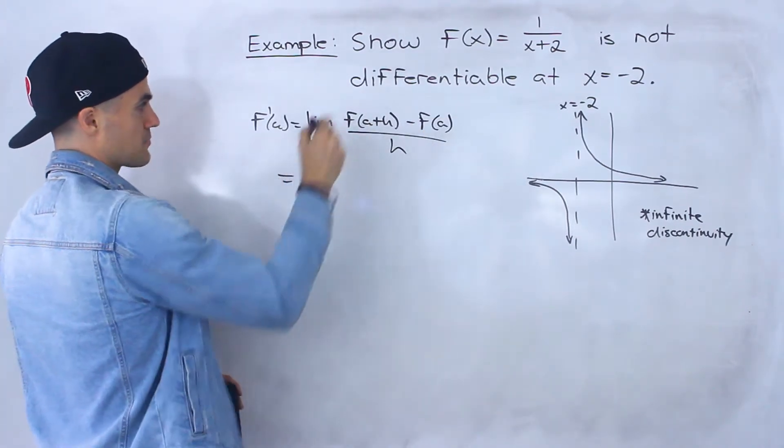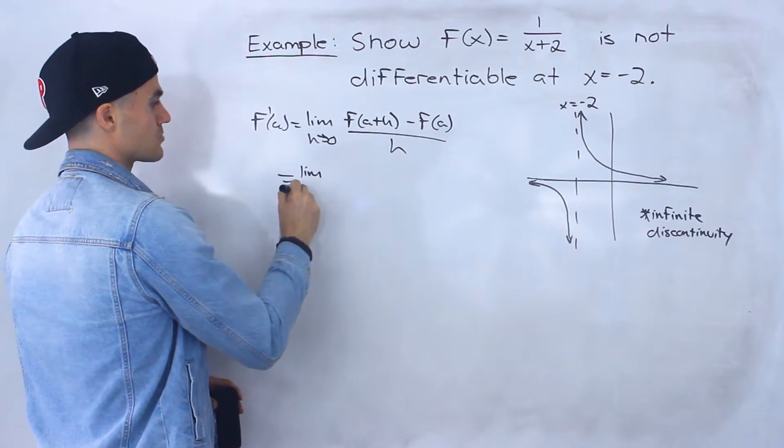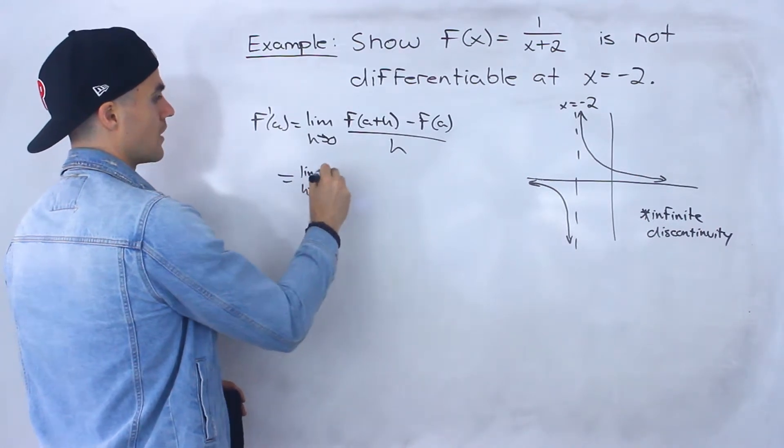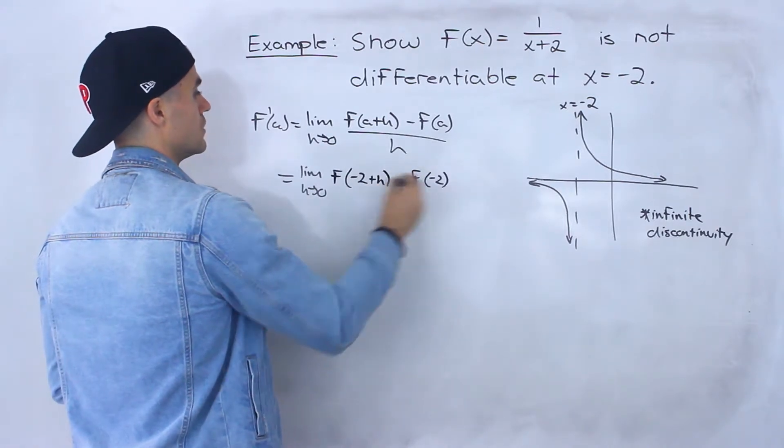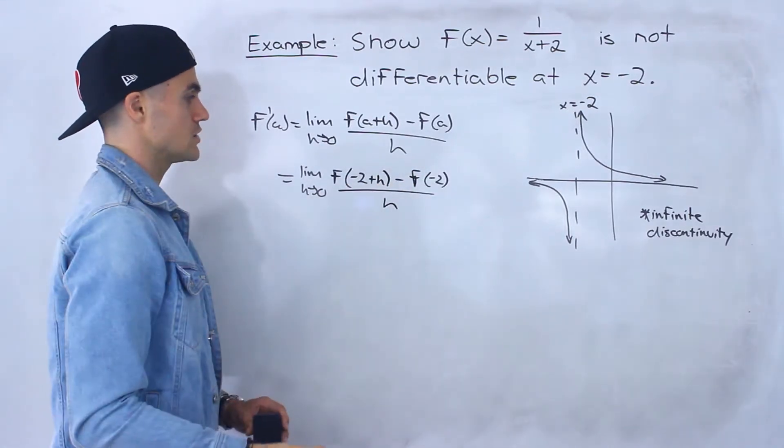Well, if we plug in these parameters, what we'll have is the limit as h approaches 0 of f of negative 2 plus h minus f of negative 2 all over h.